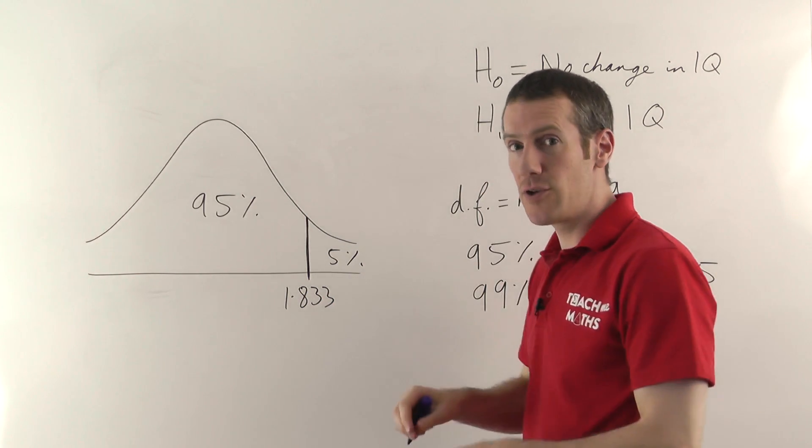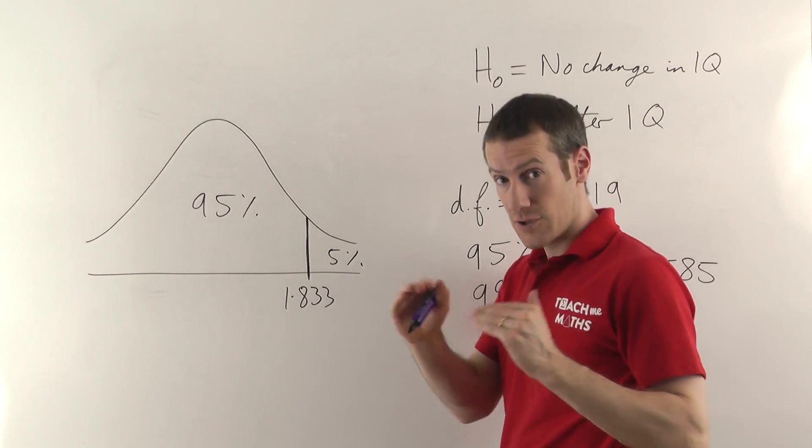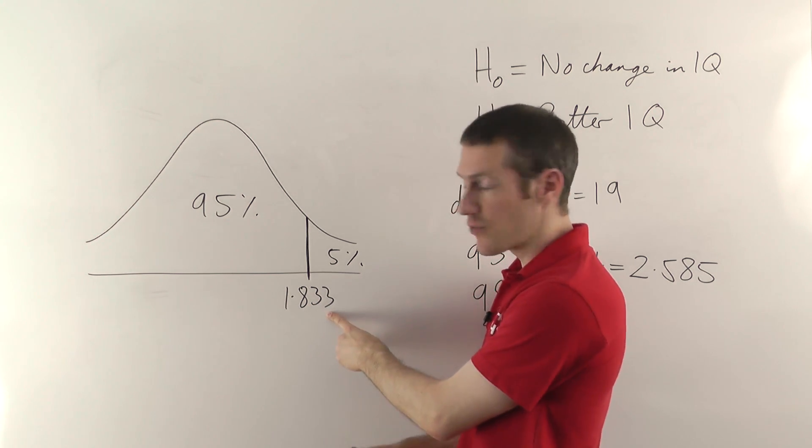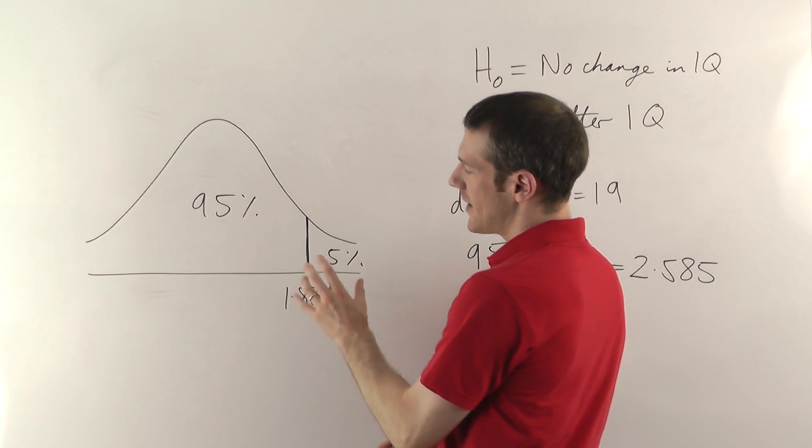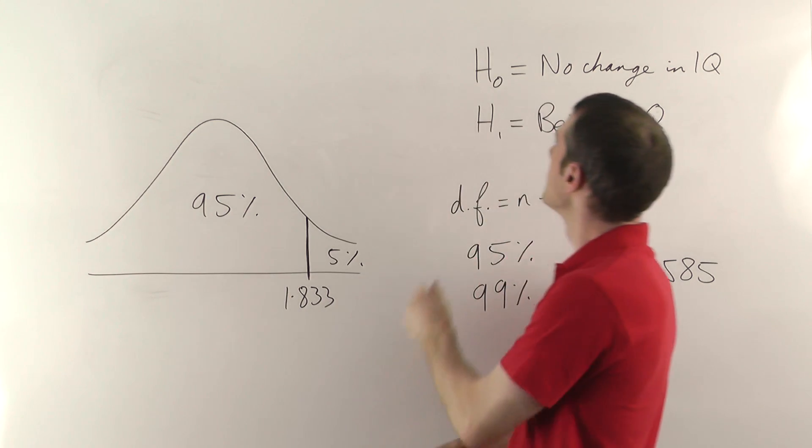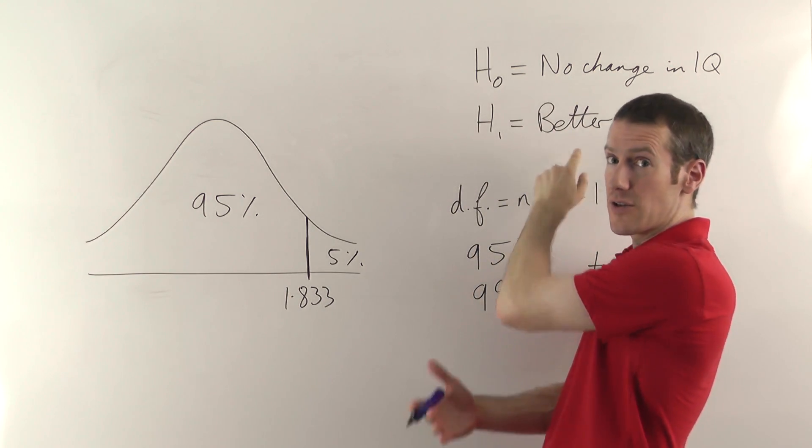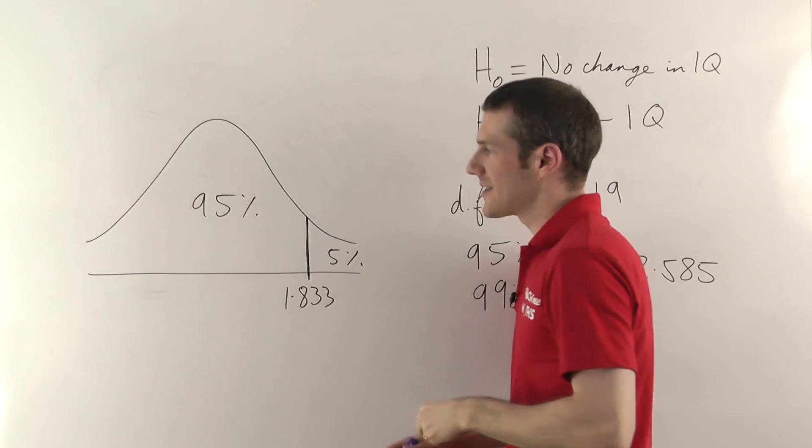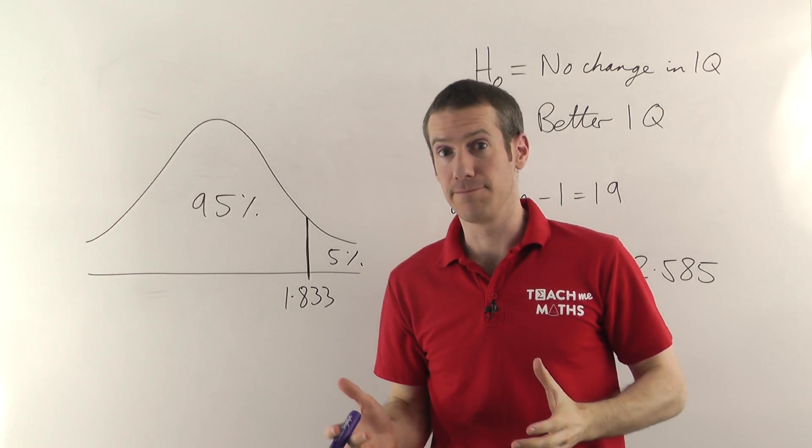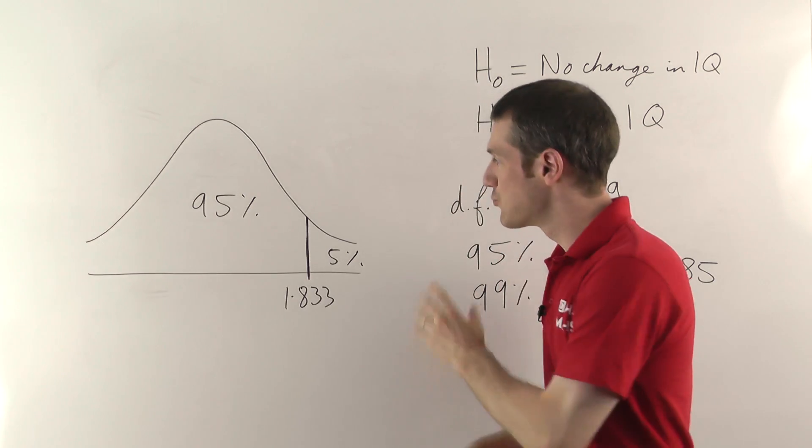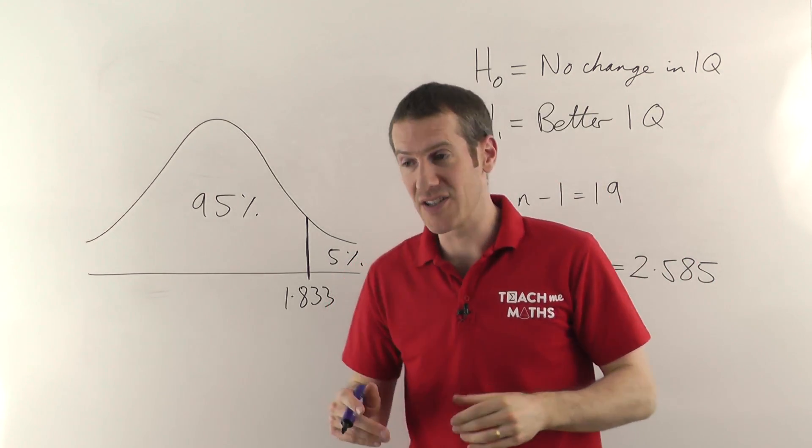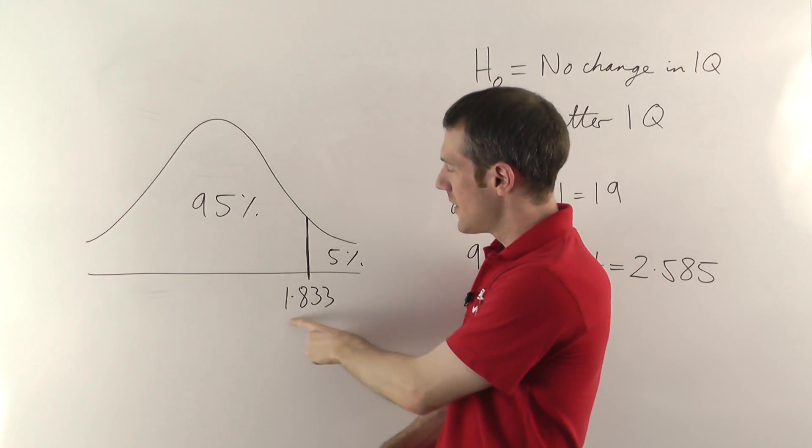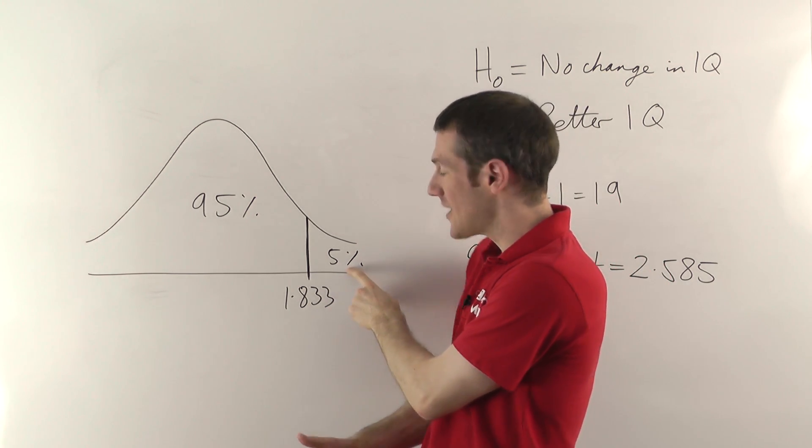What that means is, if you compare two means from two samples, and your T value is 1.833, that means there's a 95% chance that there is a better IQ, that there is an actual difference. And there's a 5% chance that that difference between the means was due to luck. So the probability of these patients, the 20 patients, getting better scores on their second test with a T value of 1.833 is only 5%.